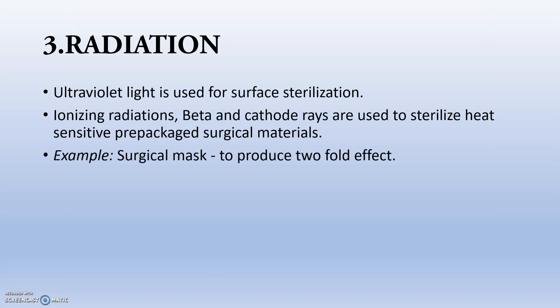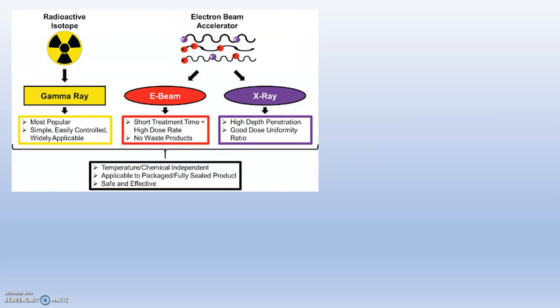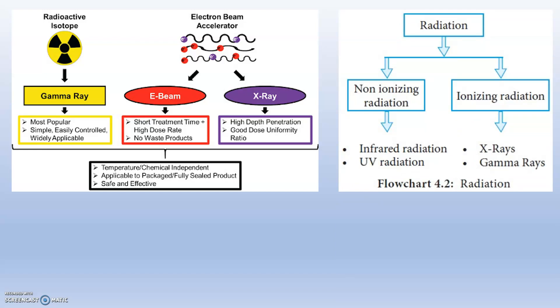Next is radiation. Ultraviolet light is used for surface sterilization. Ionizing radiations — beta and cathode rays — are used to sterilize heat-sensitive pre-packed surgical materials. In those cases, we can use UV radiations or ionizing radiations, for example for surgical masks. Radioactive isotopes are the most popular, simple, easily controlled, and widely applicable. In the electron beam accelerator, electron beams and X-rays are used, providing high depth of penetration in the case of X-rays. Radiations are divided into non-ionizing (infrared and UV) and ionizing (X-rays and gamma rays).